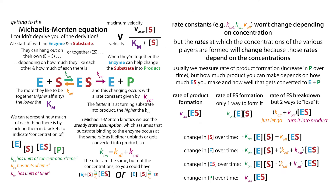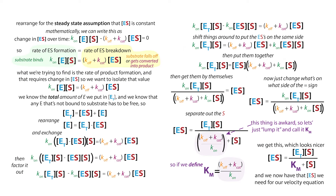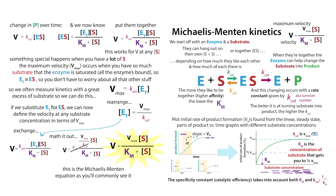One of the key things that comes from deriving the Michaelis-Menten equation is that it helps you see why we can rearrange things and simplify them to talk about any velocity in terms of the Vmax. We can do this by making the assumption that the total amount of enzyme equals the amount of enzyme-bound substrate — but we can only make that assumption when we have a large excess of substrate. When we have large excess substrate, the enzyme is able to work at its Vmax.